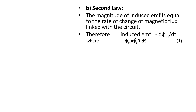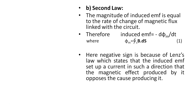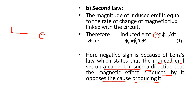The magnetic flux is given by the closed surface integral of B·dS, where B is the magnetic flux density and dS is the area element through which the flux passes. There is a negative sign in the equation due to Lenz's law, which states that the induced EMF sets up a current in such a direction that the magnetic effect produced by it opposes the cause producing it. The induced EMF will be in the opposite direction to the cause producing it.